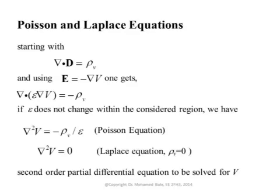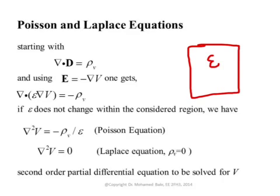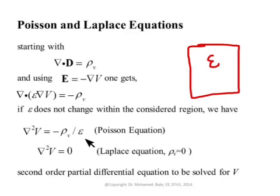Now if you apply this equation at a point not on a boundary, epsilon does not change. This is valid for any region where you have the same epsilon everywhere. In that case, epsilon is not a function of position, so I can take epsilon out from the differentiation, and you have the divergence of the gradient, which gives you Nabla squared. Dividing both sides by epsilon, the first equation we have is called Poisson's equation, named after the French scientist who discovered it. It simply says: if you know the volumetric charge density everywhere in your region, you can obtain the electric potential by solving Nabla squared V equals minus rho volumetric over epsilon.